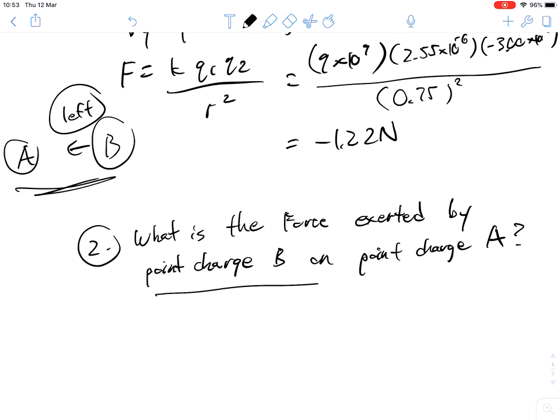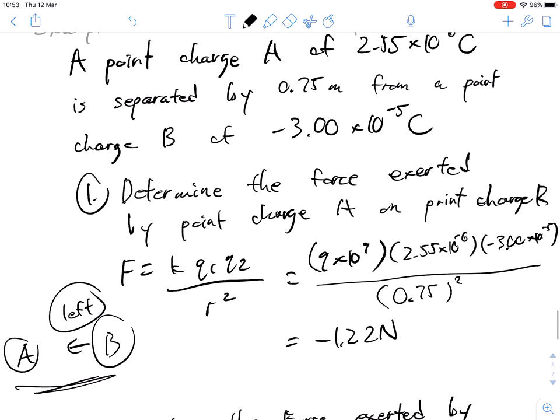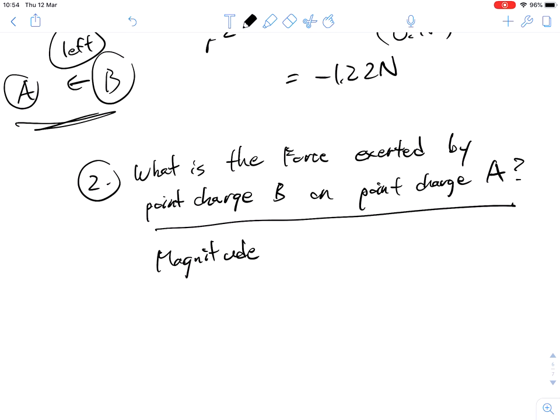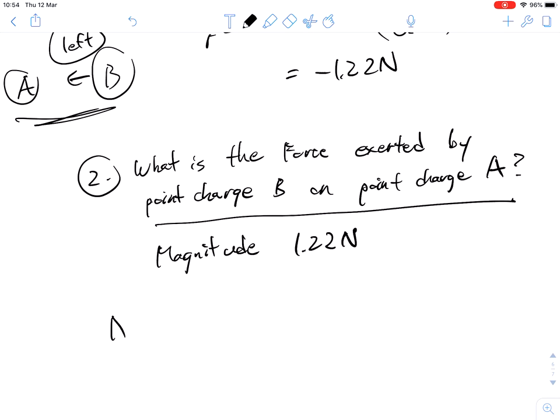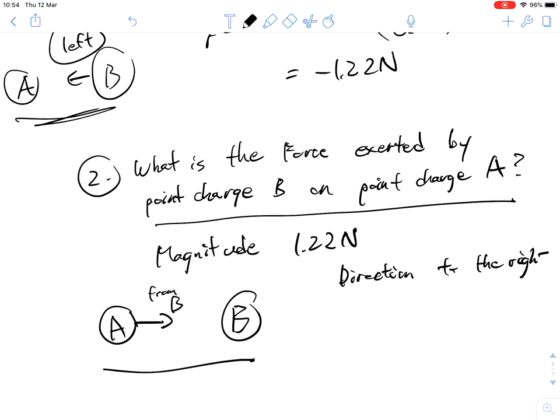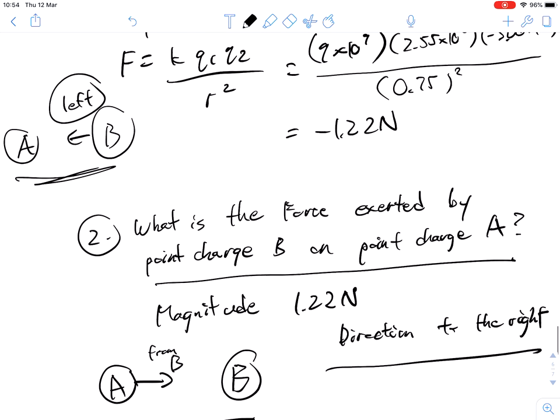What is the force exerted by point charge B on point charge A? So the magnitude of the force is identical. It doesn't matter if it's B on A or A on B, even if they are different. So they are different values. They exert the same amount of force, which is 1.22. But B is going to exert, B is going to be pulling it this way. This is from B. So the magnitude is 1.22. The direction, in this particular case, is going to be to the right. So equal in magnitude, opposite in direction.